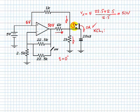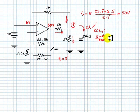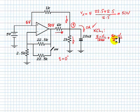The KCL equation is: (5 minus V1) over 1 kilo, plus (50 minus V1) over 4 kilos, equals V1 over 2 kilos.